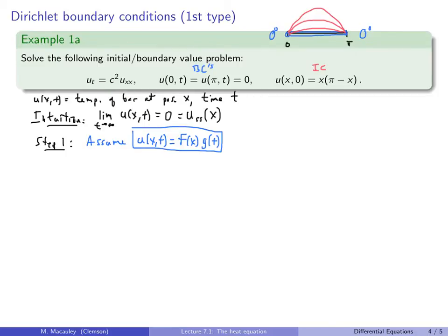Before we plug back in, we need to take some derivatives. u_t = d/dt of f(x)g(t) — since f(x) is a constant with respect to t, we get f(x)·g′(t). And u_xx, the second partial derivative, is f″(x)·g(t). Now we're ready to plug back in, but first I'll do a bit more preprocessing.